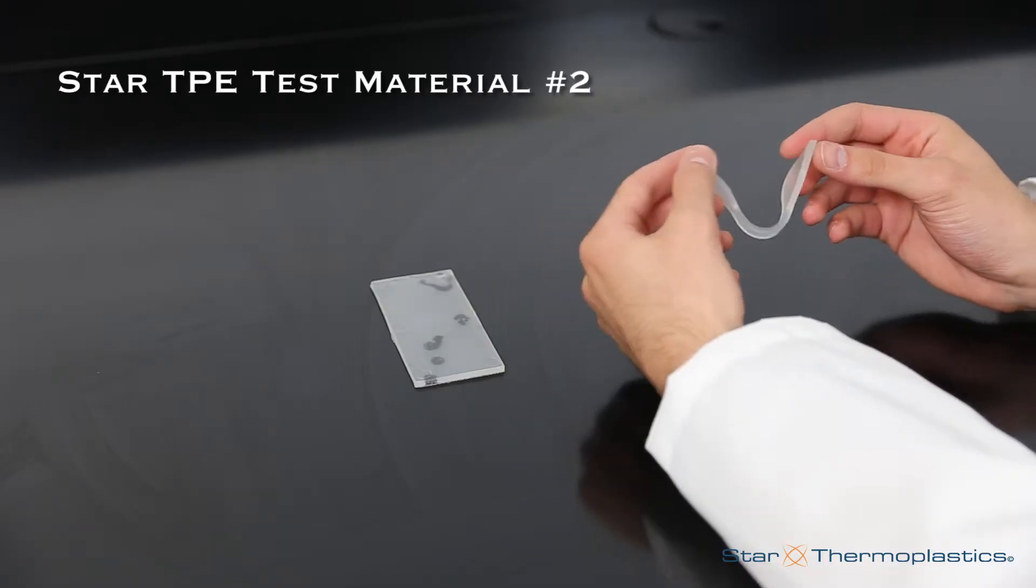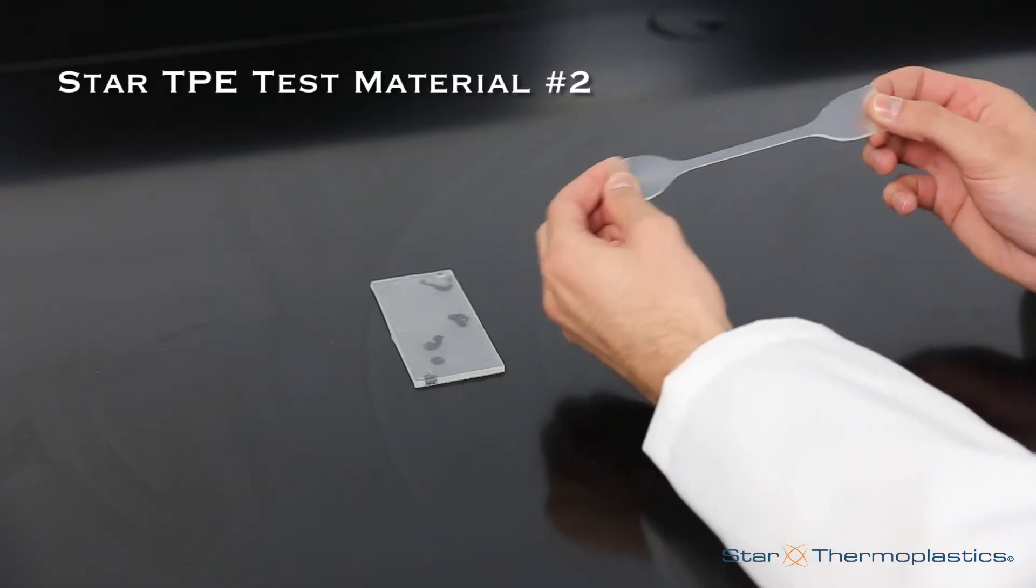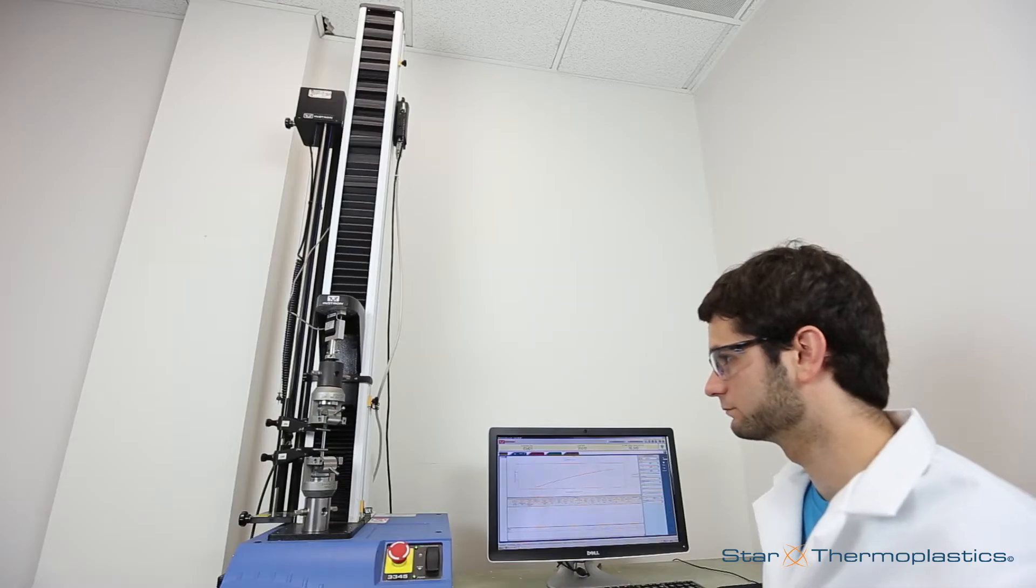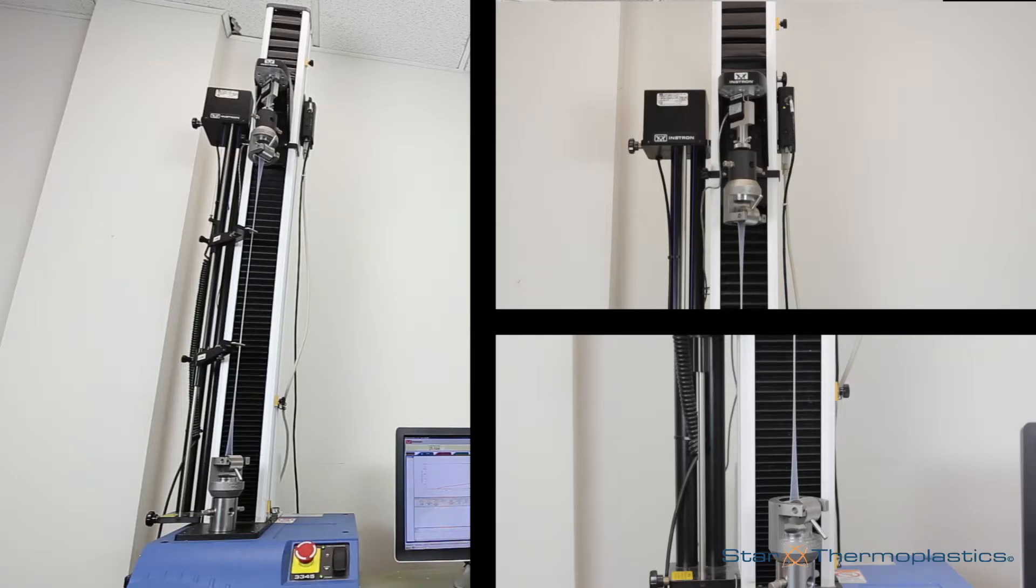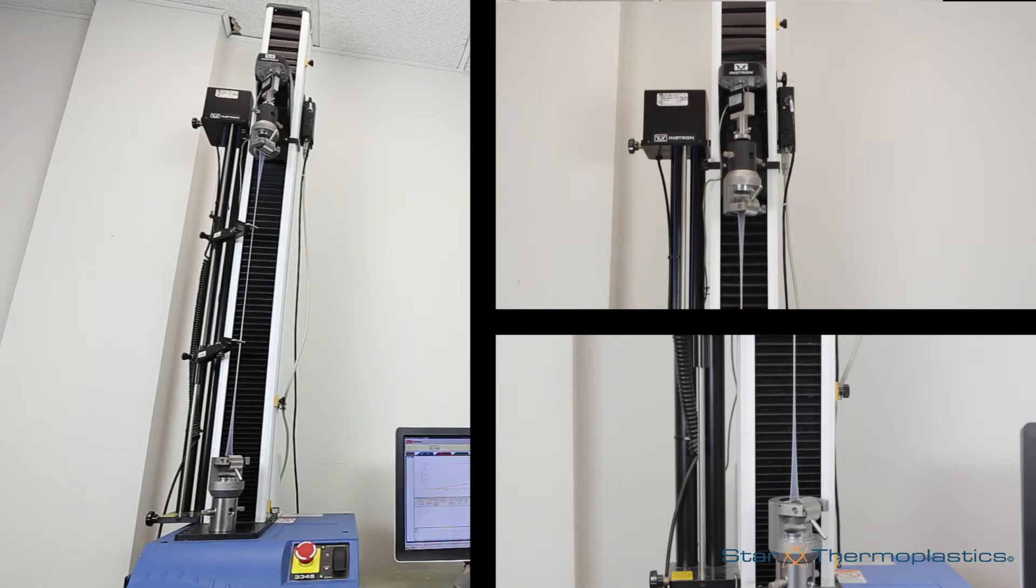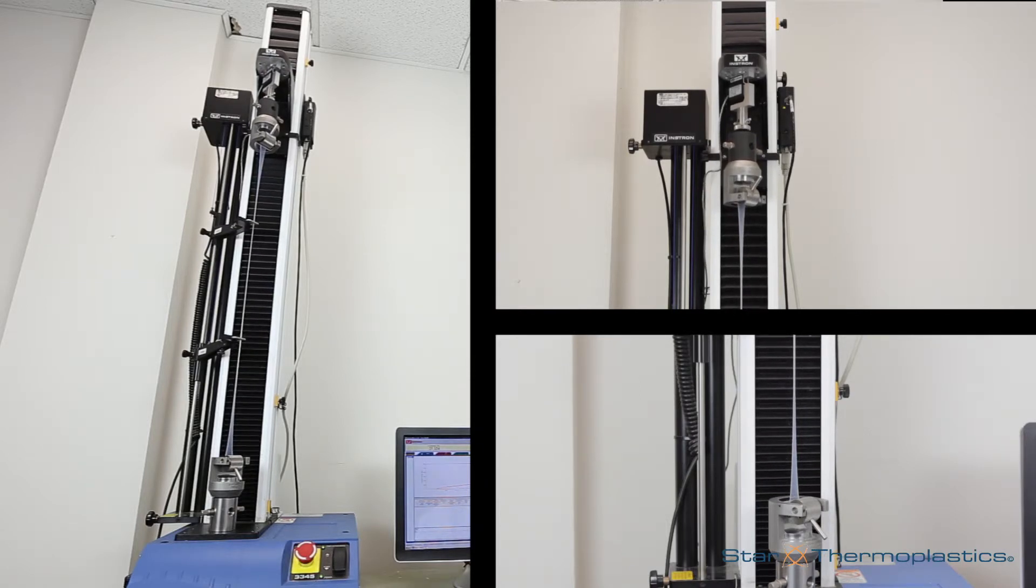And here's a soft, gel-like TPE, used for applications such as bicycle seats, shoe insoles, or other soft skin contact parts. Because these applications don't typically involve the need for continuous stretching, their tensile strength can be much lower.